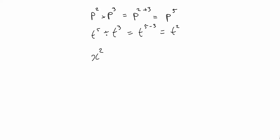Note that if we had x squared times y cubed, we can't add the indices 2 and 3 because the bases are different — x and y. So there's no simpler way of writing that apart from x squared y cubed. Of course, if it was x squared times x cubed, then we could add the indices to give x to the power of 5.